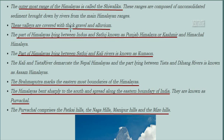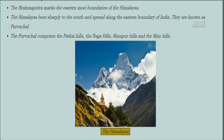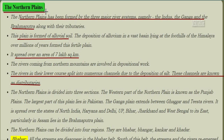The part of the Himalayas lying between the Indus and the Satlesh is known as Punjab Himalaya or Kashmir and Himachal Himalaya. Between the Satlesh and Kali rivers lies the Kumaon Himalaya. The Kali and Tista rivers demarcate the Nepal Himalayas. The part between Tista and Dihang rivers is known as Assam Himalayas. The Brahmaputra marks the easternmost boundary. Beyond this, the Himalayas bend sharply south along India's eastern boundary and are known as Purvachal, comprising Patkai, Naga, Manipur, and Mizo hills.